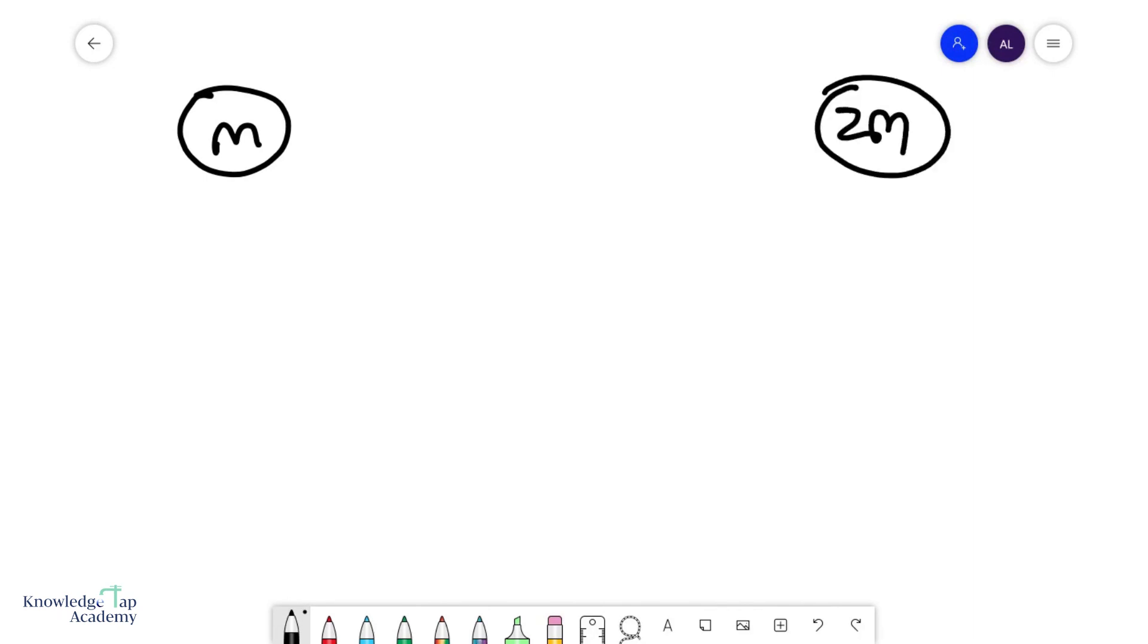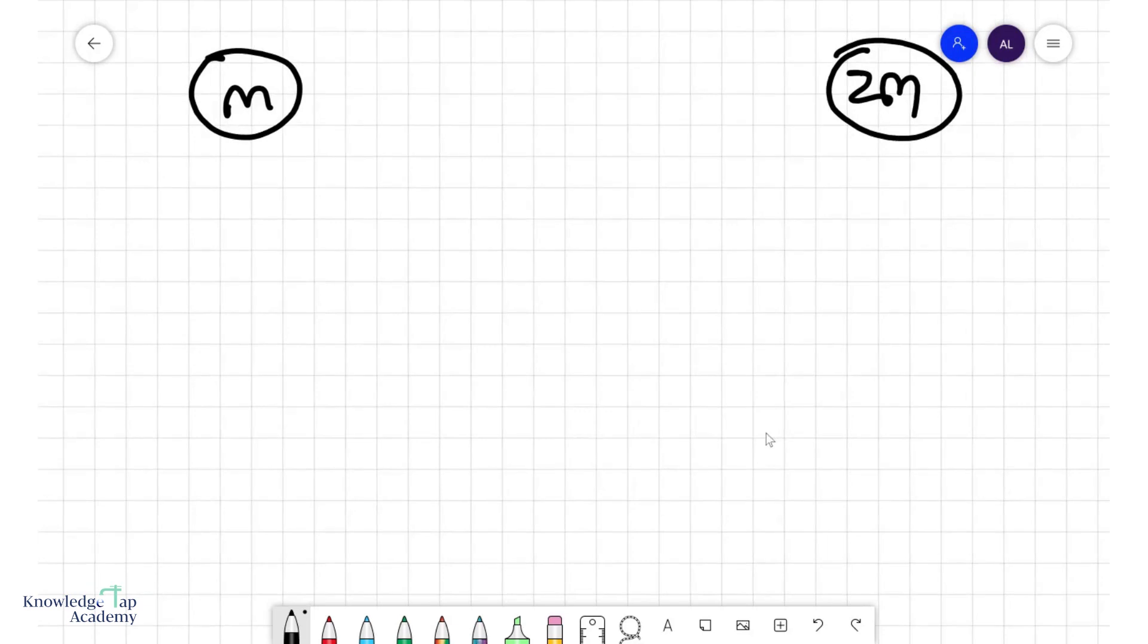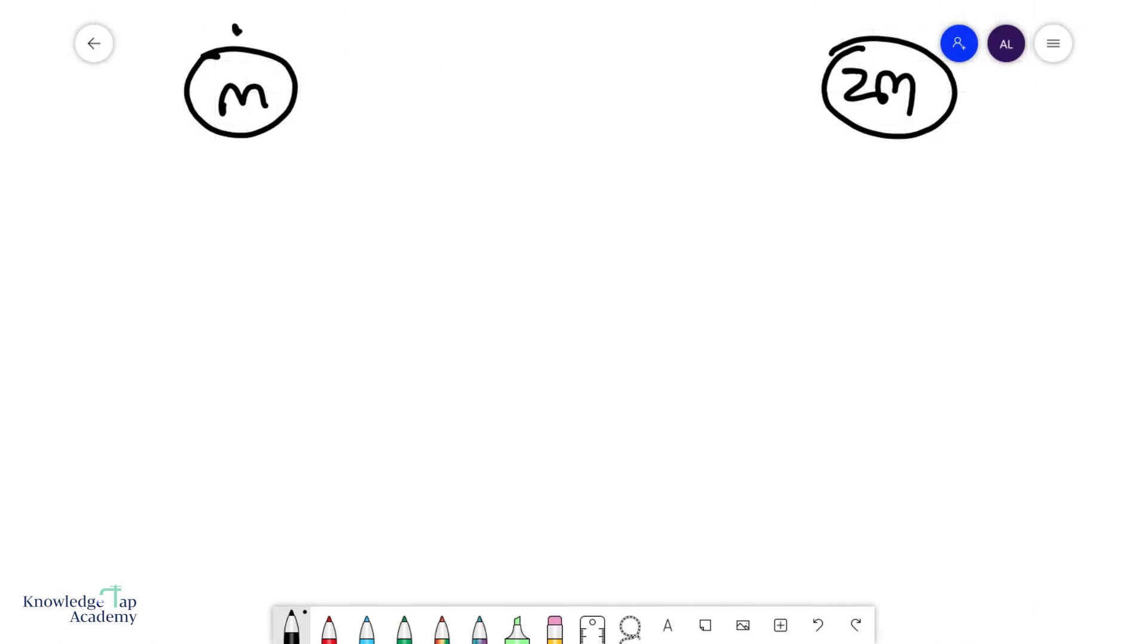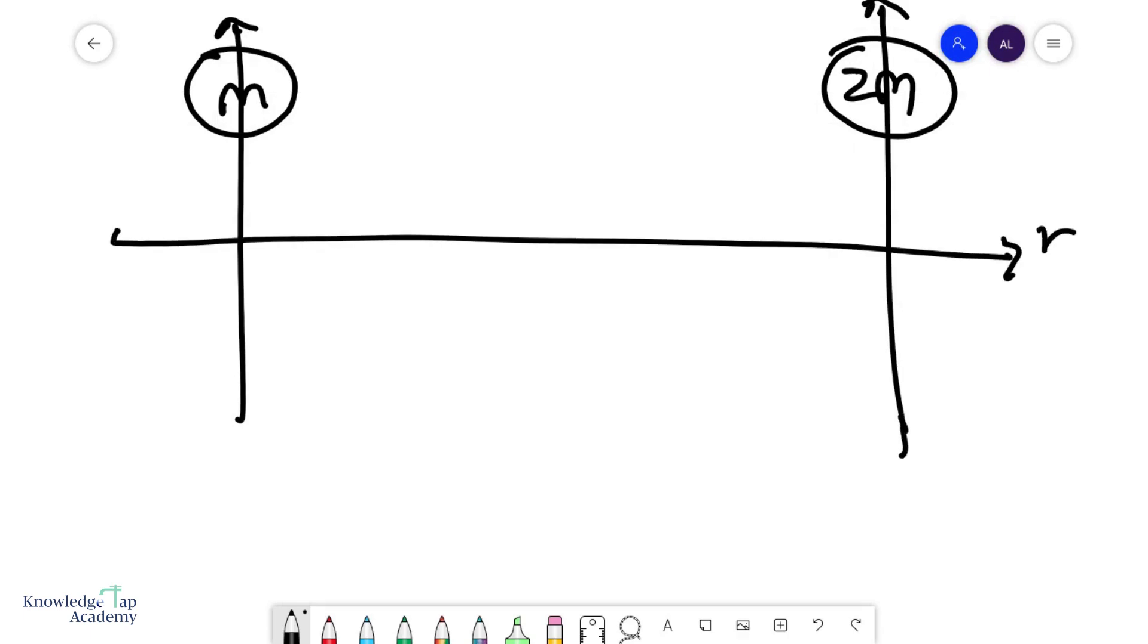And we're going to try to plot the net gravitational field strength due to these two masses on the same axis. And so here we go. This is your r. We're only interested in what happens from the surface of the masses.